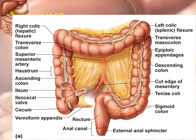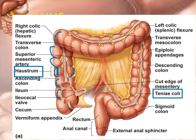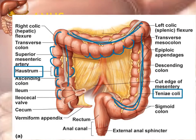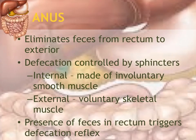Haustrum is singular — one pocket or bulge; haustra is plural. The taenia coli are the bands running across the large intestine. The taenia coli is shorter than the large intestine, and that is what creates the bulges. The anus is the opening where defecation occurs — solid waste comes out — and the rectum stores it until it is eliminated.